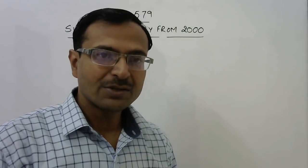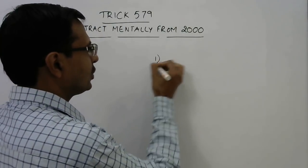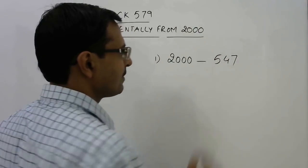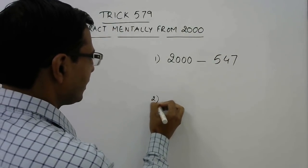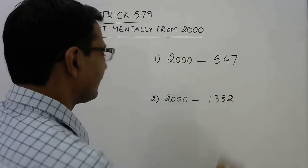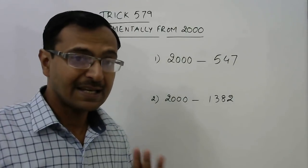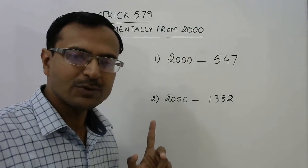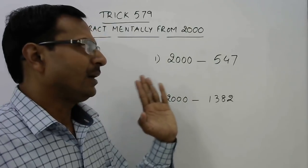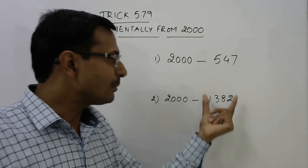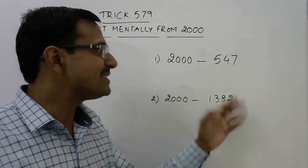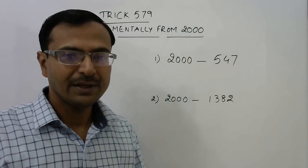Whenever we talk of subtraction from 2000, there are two different cases. In the first example I will be subtracting an amount less than 1000, say 547 rupees, and in the second example I will be subtracting an amount more than 1000, say 1382. The steps involved are a little bit different — subtracting less than 1000 is easier, while subtracting more than 1000 involves one more step.